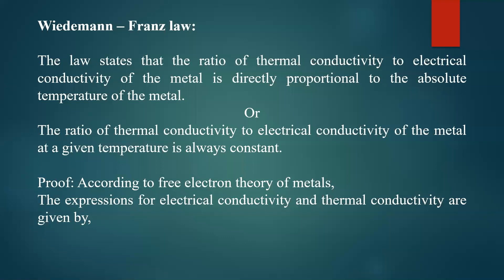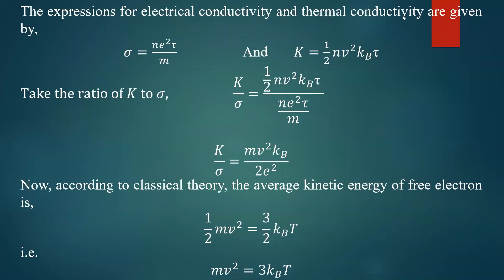Let us prove this using the free electron theory of metals. The expressions for electrical conductivity and thermal conductivity are given as follows. Electrical conductivity sigma equals n e squared tau divided by m — this was derived in the previous class. Today we derived thermal conductivity k equals one-half n v squared k_B times tau, expressed in terms of relaxation time tau.